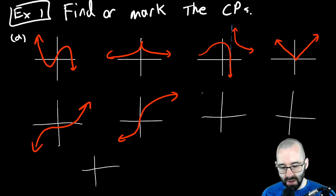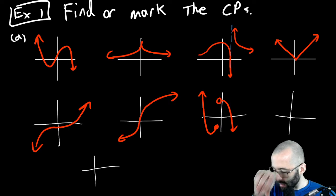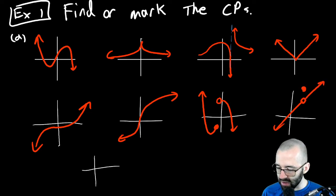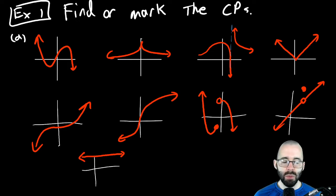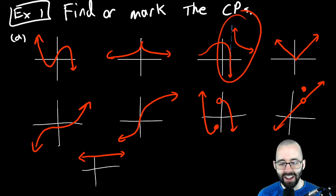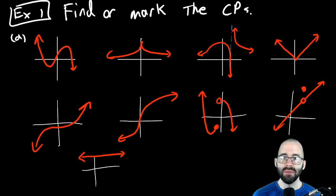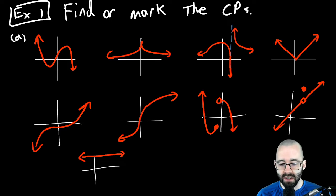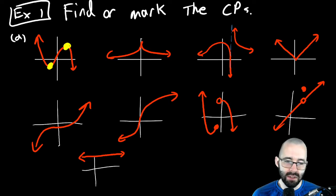Remember that critical points occur at points where the derivative is undefined or the derivative equals zero. For the first graph, there are horizontal tangent lines at two points — derivative is zero at both — those are the only ones. For the second graph, there's a vertical tangent line where the derivative is undefined, and a horizontal tangent line where derivative is zero.